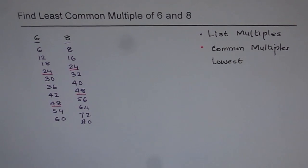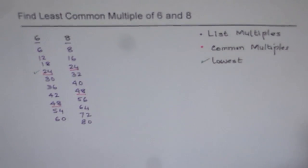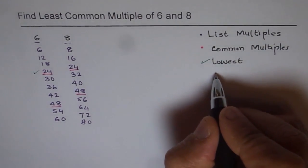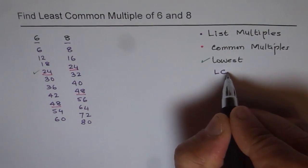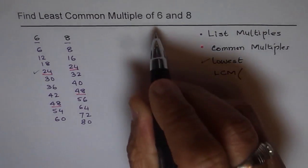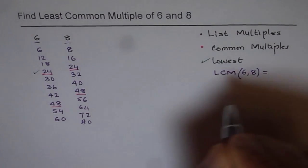The common multiples are 48 and 24. Now, which one is the least of this? So least is 24. So that is the lowest. So we have least common multiples, which I can write as LCM in short. And this is another way of writing. LCM of 6 and 8, we say 6, 8 equals to 24.